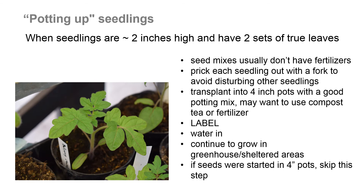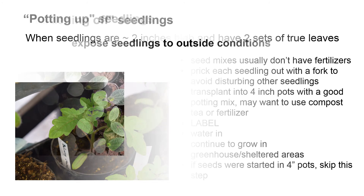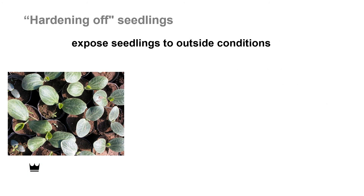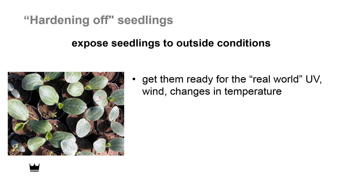Then we're going to water in and continue to grow in a greenhouse or sheltered area. Before we transplant our seedlings, we want to go through the process of hardening off, which means that we expose them to outside conditions. This gets them ready for the real world of the garden — the ultraviolet light, the wind, the changes in temperature, the uneven moisture, and so on.